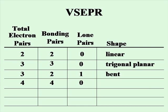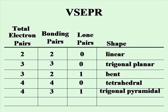If you have four electron pairs and all four are bonded with none as lone pairs, you will have a tetrahedral geometry. If you have four total electron pairs, three are bonded and one is a lone pair, you will have a trigonal pyramidal geometry. If you have four total electron pairs with two bonding pairs and two lone pairs, then your geometry will be bent.